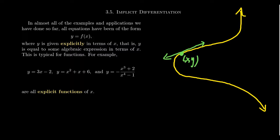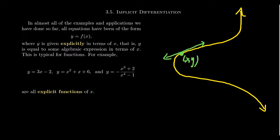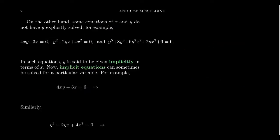Function relationships are these explicit relationships: y equals f of x. Many examples we've seen of this would be like y equals 3x minus 2, y equals x squared plus x plus 6, y equals negative x cubed plus 2 over x to the fourth minus 1. These are all examples of explicit functions, or perhaps better termed explicit equations. Because these are all equations — y equals something — the relationship between y and x is explicitly given in the equation.